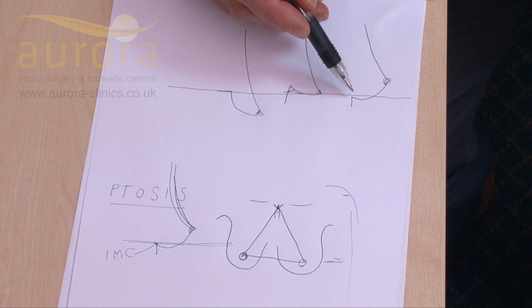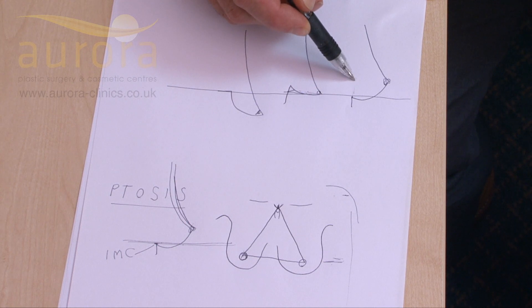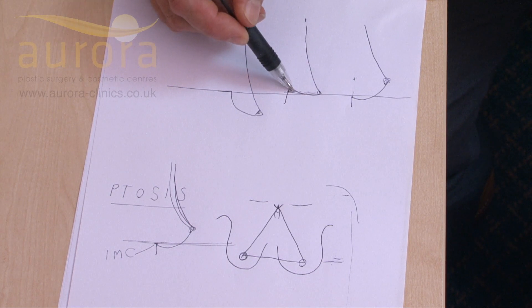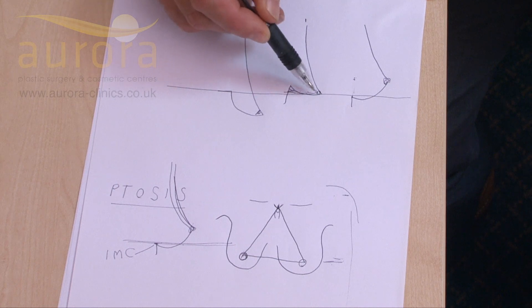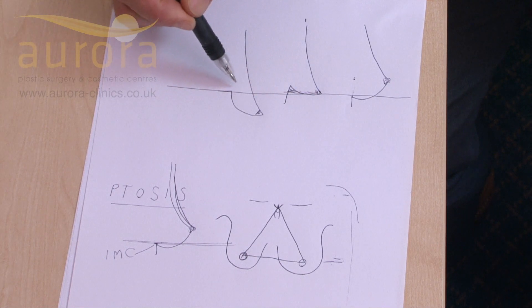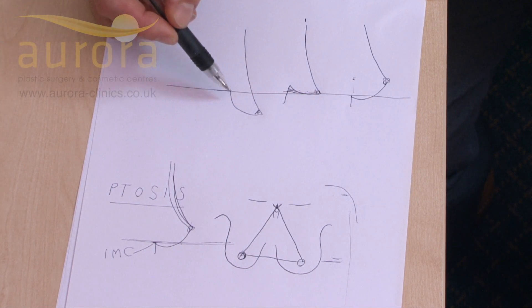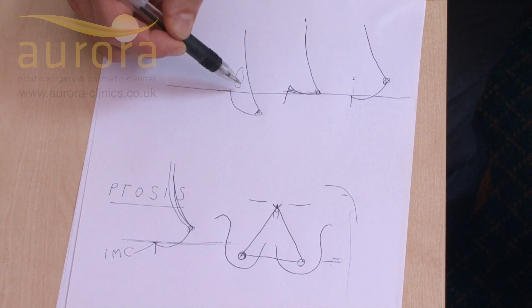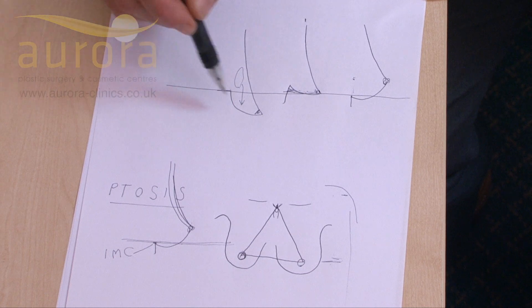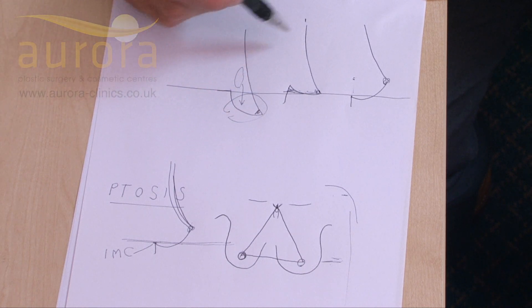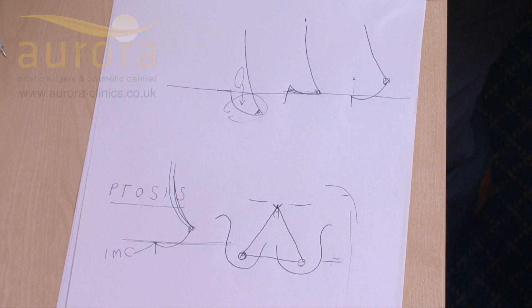Now, if the nipple lies above the fold, you don't need an uplift. If the nipple lies at the level of the fold, we could consider an uplift. But if the nipple lies below the fold, if we do a breast implant, the implant will tend to go to the lowest part. And we get fullness in this area, but we won't achieve a very nice breast shape.